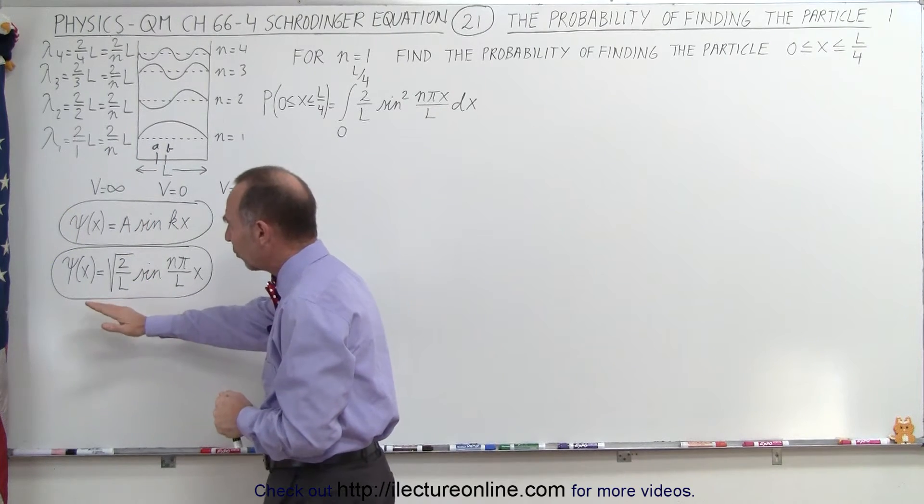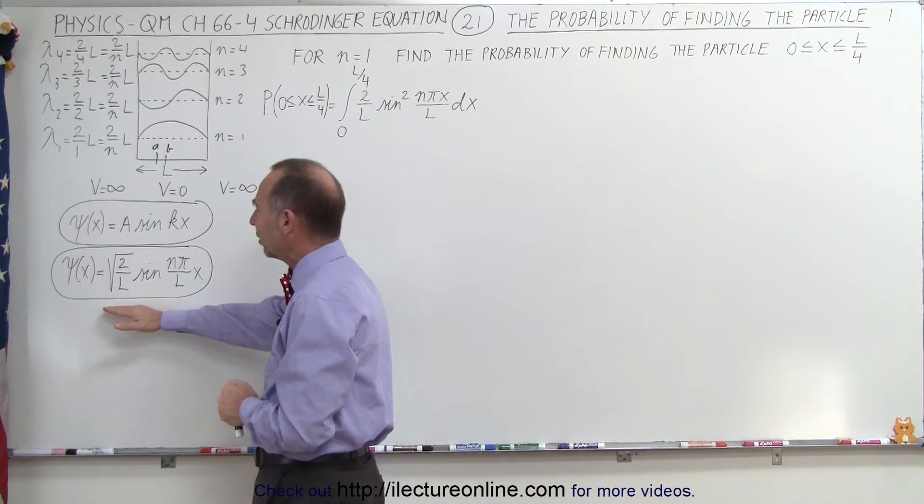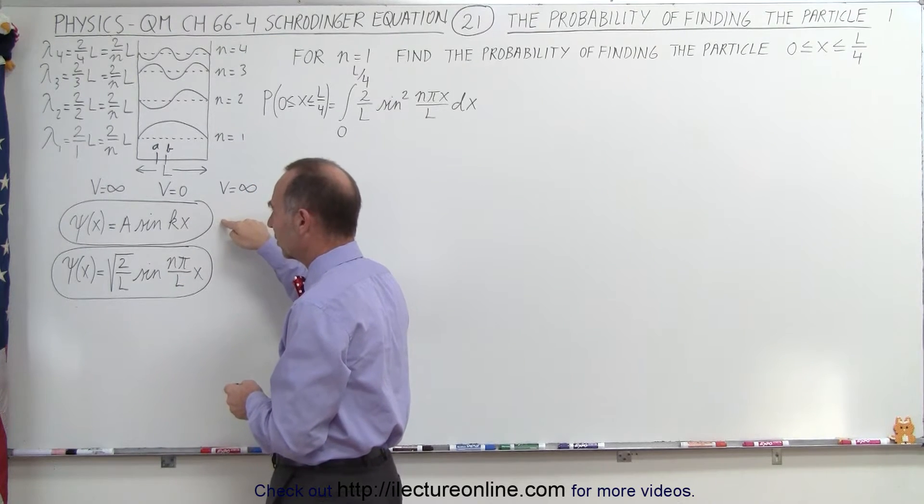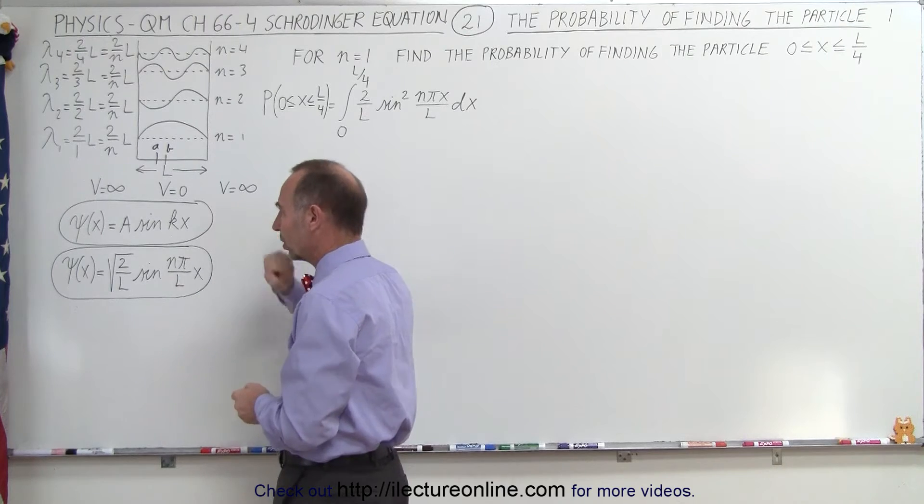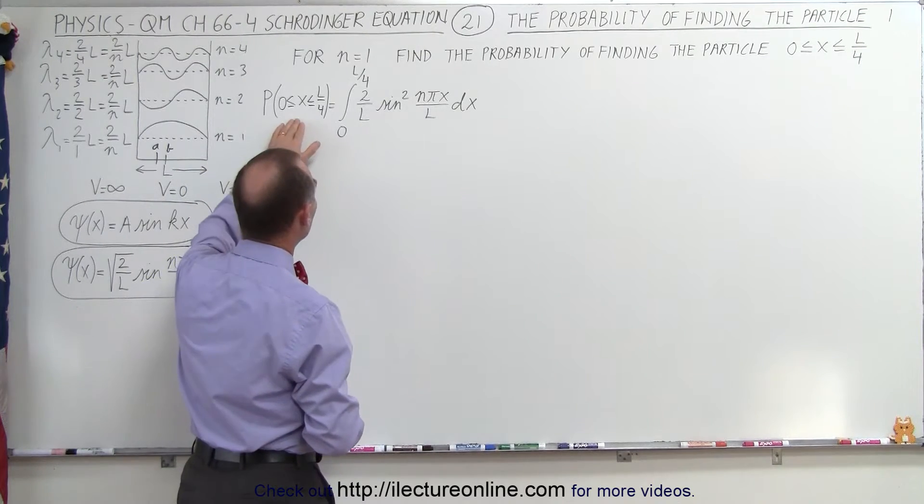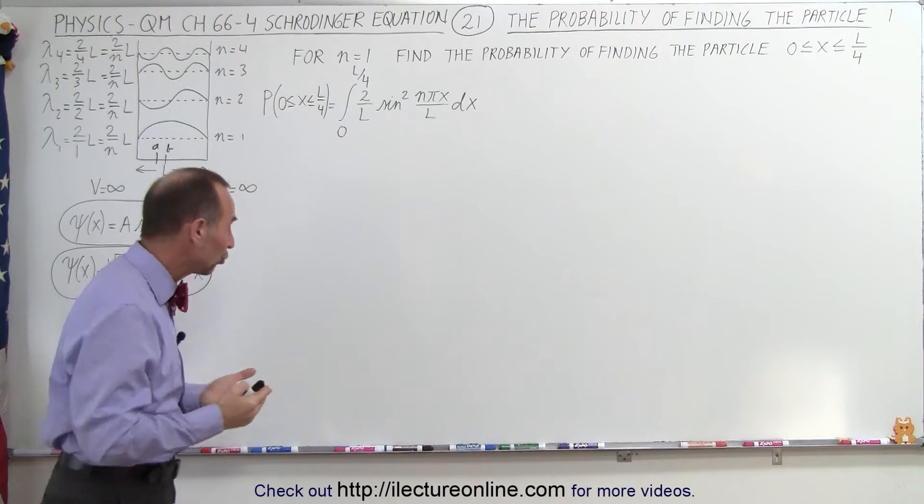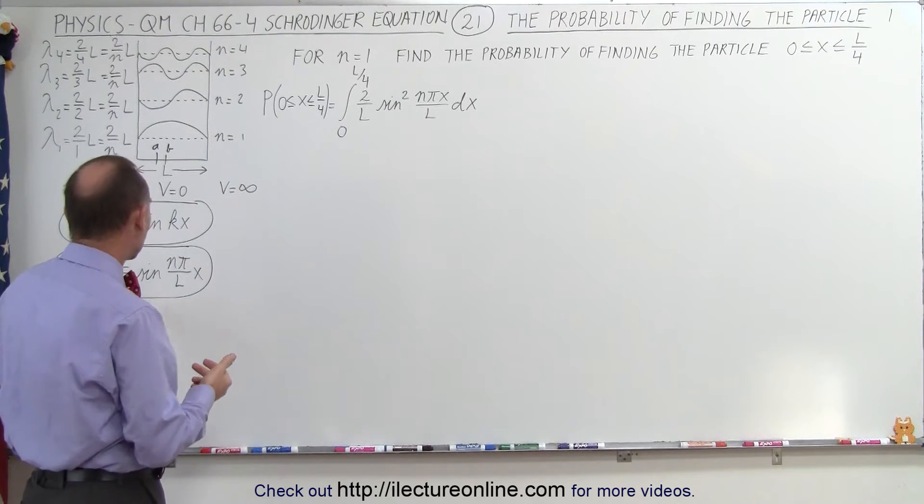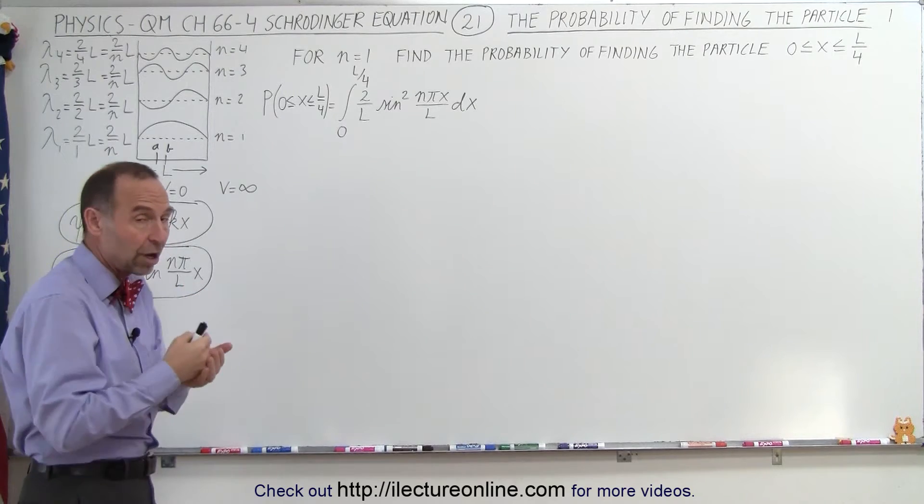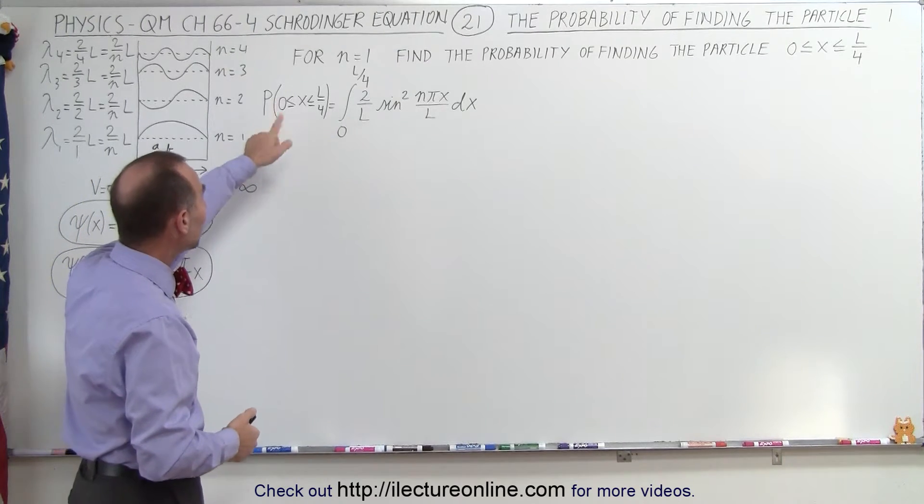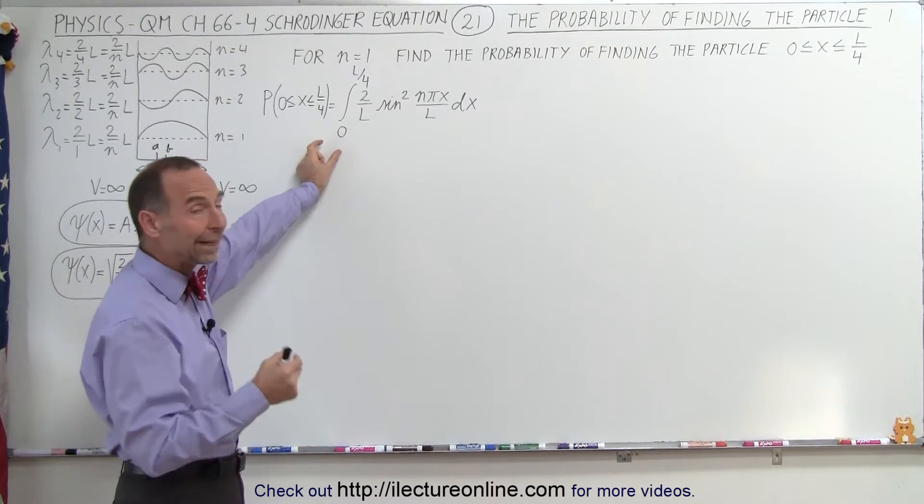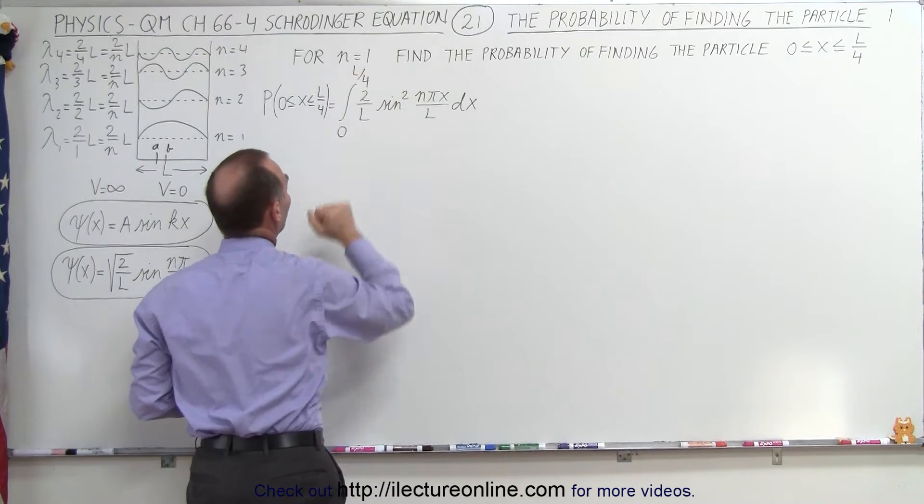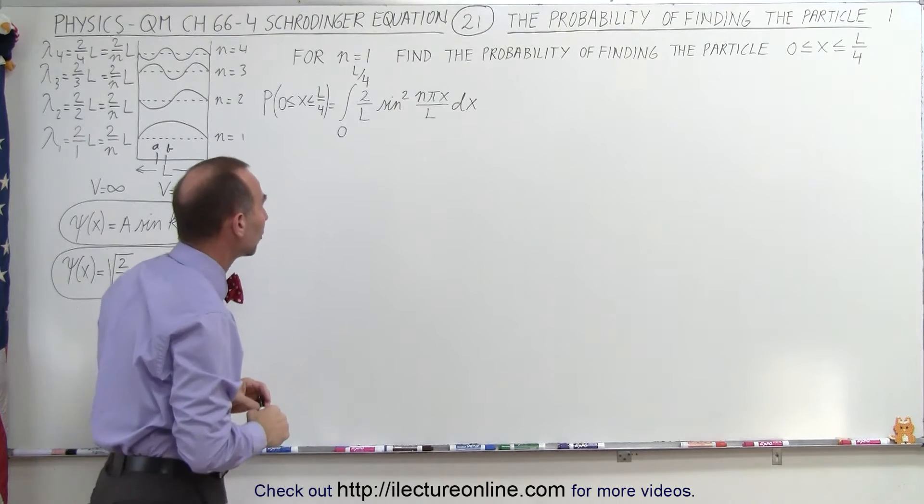The wave equation that we derived for the particle in a one-dimensional well is as follows here, which came from the general concept of what the wave equation should look like. And now we're going to use that equation to find the probability, which means we're going to square this function because there's no imaginary part to it, otherwise we'd have to multiply it by its complex conjugate. And then we integrate it over the interval where we're interested in finding the probability of the particle, which means from 0 to L over 4, one-quarter the way from the left side of the well.